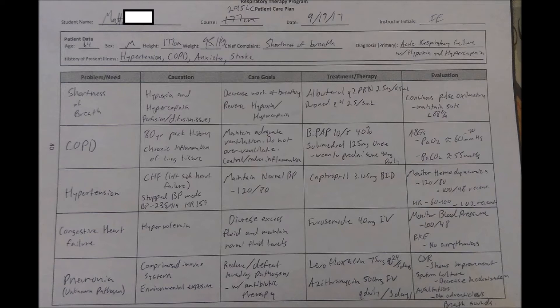For care goals, obviously we want to maintain a normal blood pressure, since hypertension is just vague for high blood pressure. I list what is your textbook normal. The one drug he was on, as far as his hemodynamic type drugs, was listed there. The evaluation of the treatment would be to continually monitor the hemodynamics for a normal blood pressure, or at least something lower than the 235. One of his most recent blood pressures was 100 over 48, and his heart rate — 60 to 100 is normal — his most recently recorded one was 102.